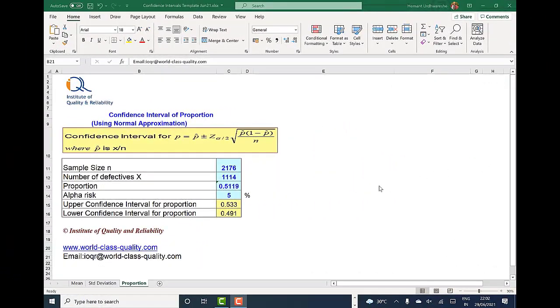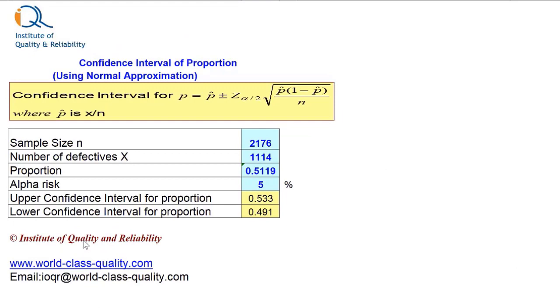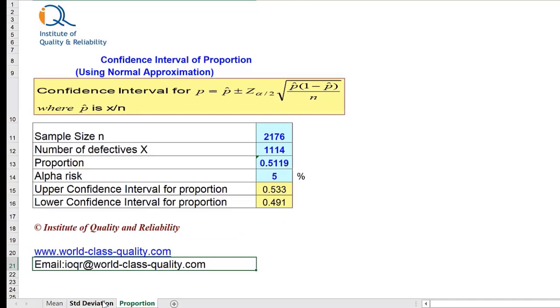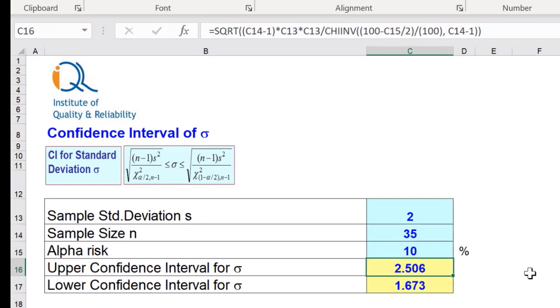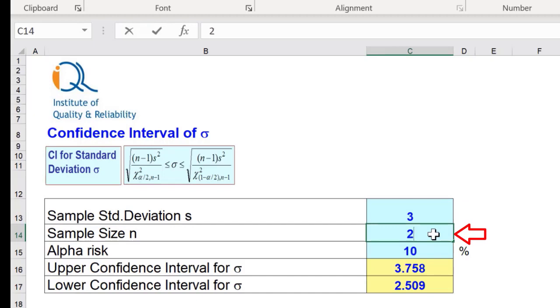Again we can use the template from Institute of Quality and Reliability, and you can request for this template at this email address. But now this time we select the standard deviation worksheet, and here we have to put the data: sample standard deviation s is 3, sample size is 26, and alpha risk is 5%, and we get the same values of the confidence interval.